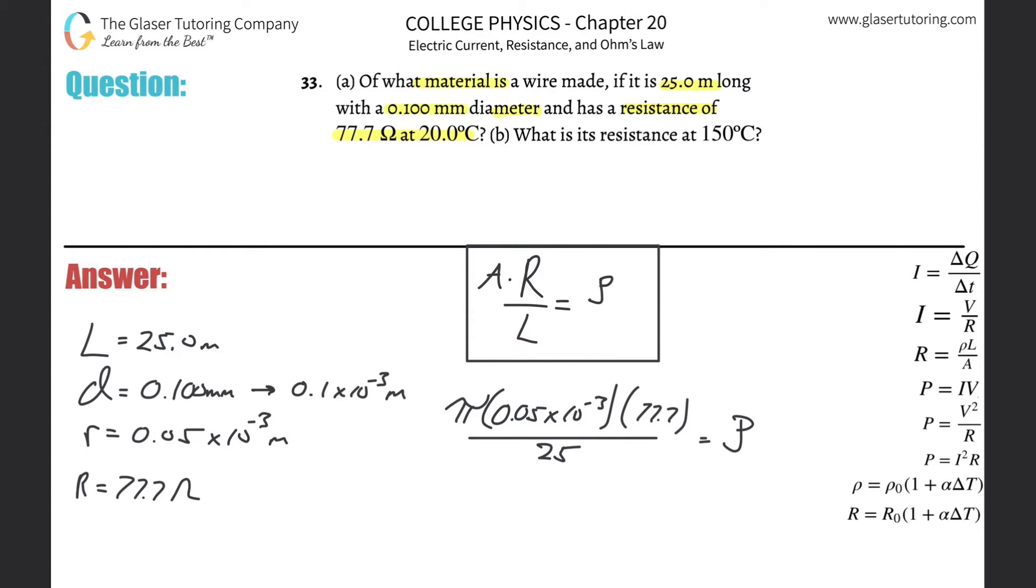So the radius we found, there it is, 0.05 times 10 to the minus 3, multiplied by the resistance then, which is going to be 77.7, all divided by the length, which was 25 meters. And that's going to be equal to my resistivity. So let's calculate. Bada bing, bada boom, pi times 0.05 times 10 to the minus 3. Andrew, what are you doing?